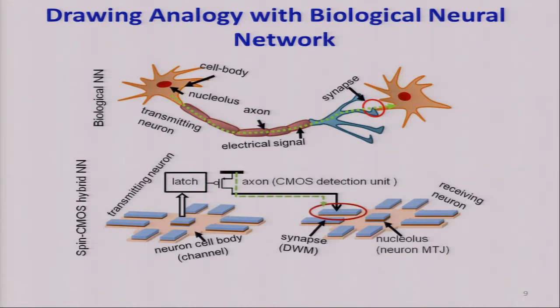We can do a one-to-one mapping of the biological neural network here. Like this is the neuron, we use this bipolar spin neuron and this is the synapses. And the axon can be just used, as I said before, using a DTCS transistor, which is very low current mode transmission.